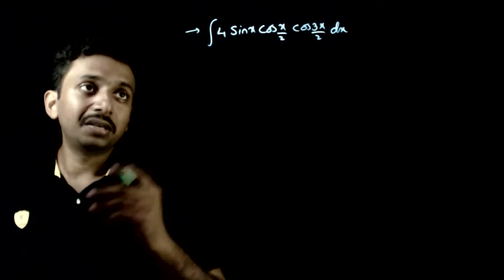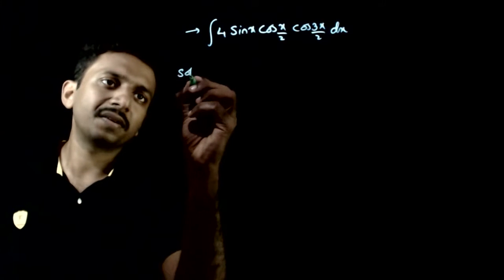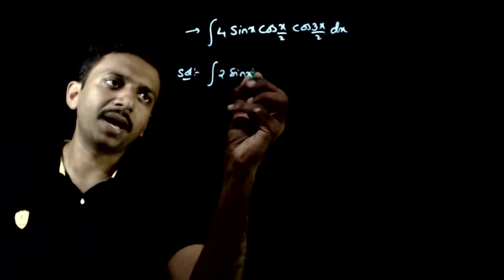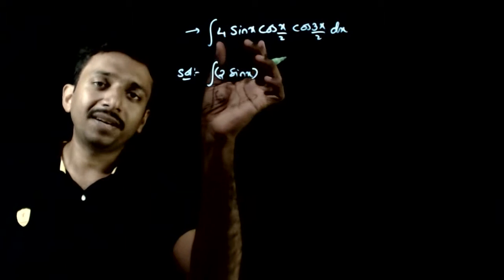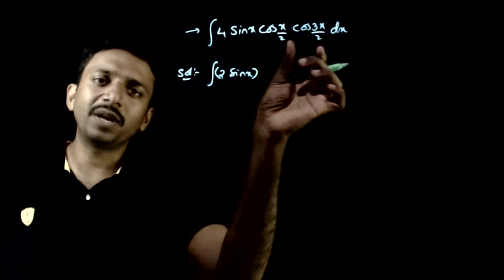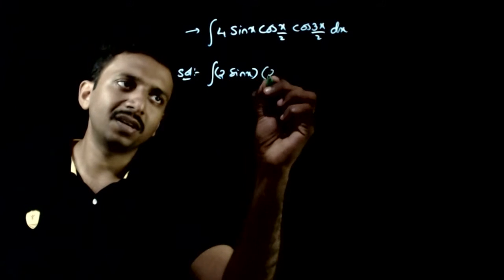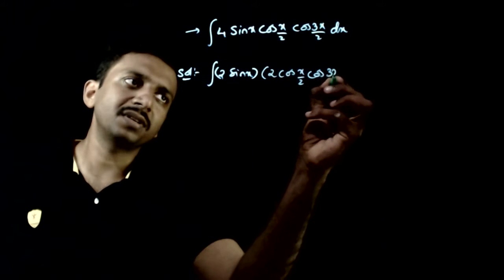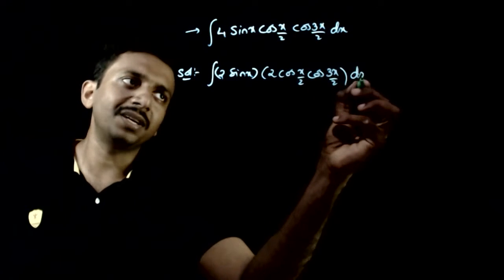How do we do this? First what I do is, I take 2 sin x separately. Then we have 2 cos x by 2 cos 3 x by 2, 2 cos x by 2 cos of 3 x by 2 dx.